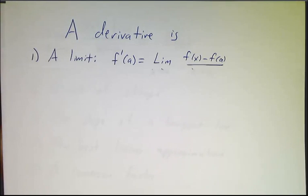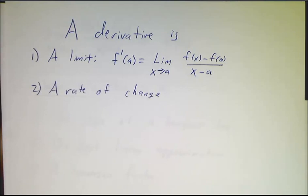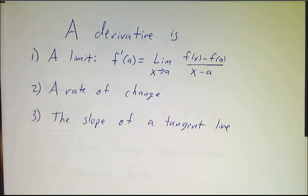We've seen that a derivative is a limit. You can write that limit in terms of h or x-a or x-h. There are different ways to write the limit, but there was the limit that defined a derivative. We saw that it was a rate of change. We saw that it was the slope of a tangent line.